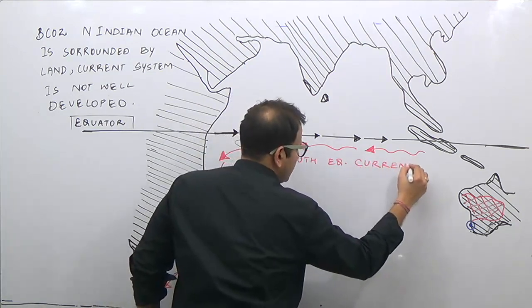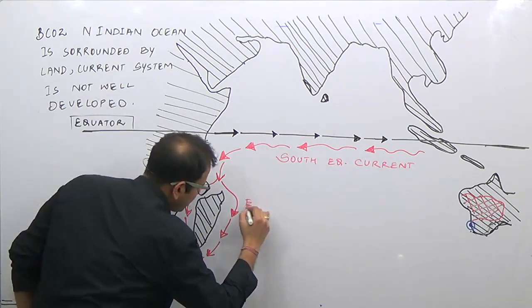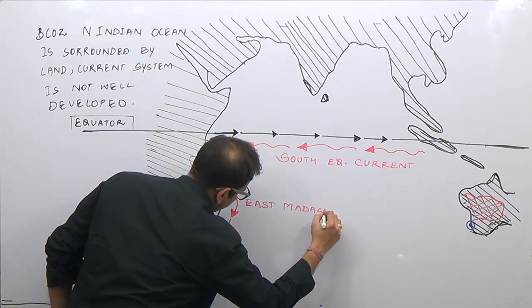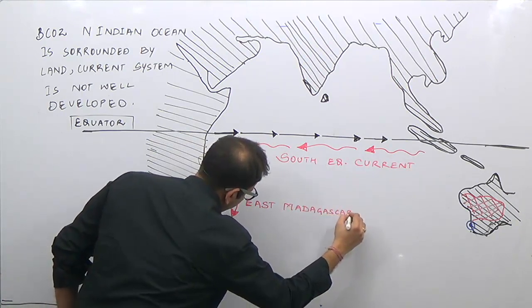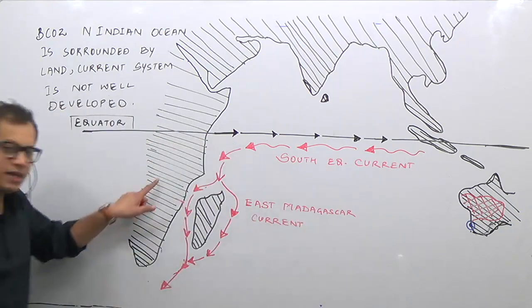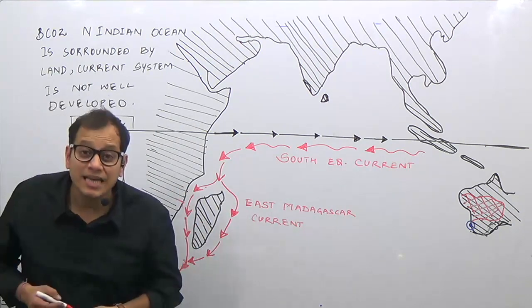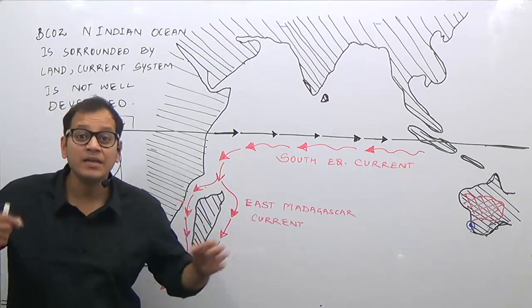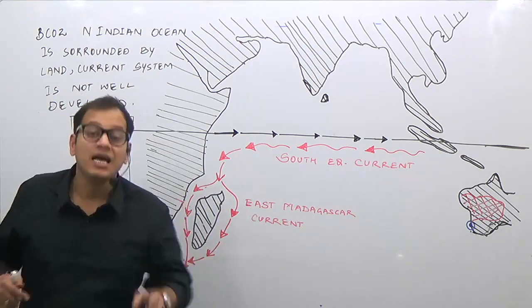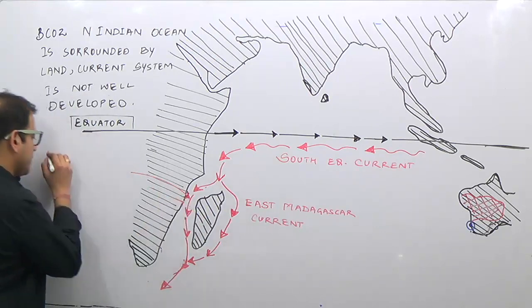The South Equatorial Current is bifurcated into two types. One is the East Madagascar Current, which flows to the eastern side of Madagascar. The other current flows between mainland Africa and Madagascar through a gap known as the Mozambique Channel — Mozambique being the country in that region. Therefore, the name of this current is the Mozambique Current.